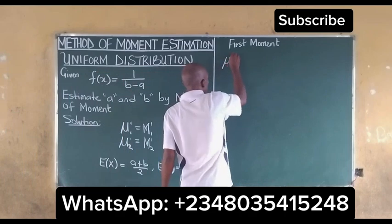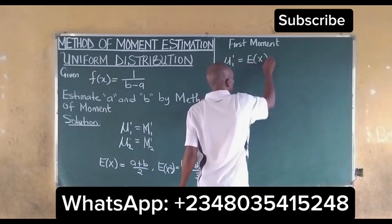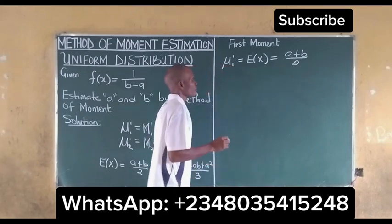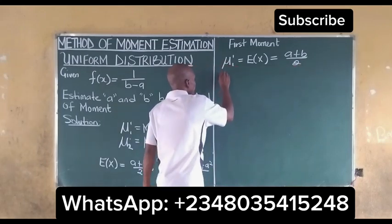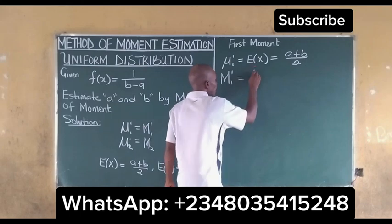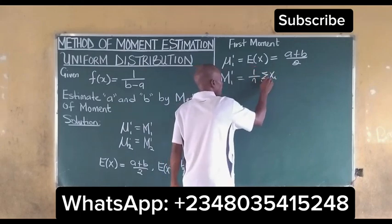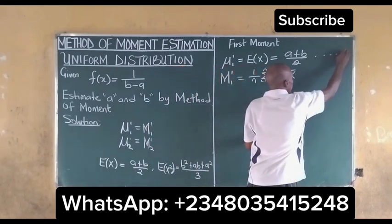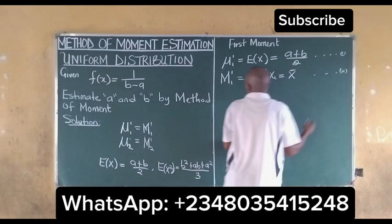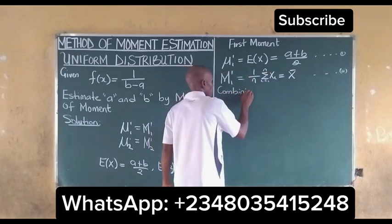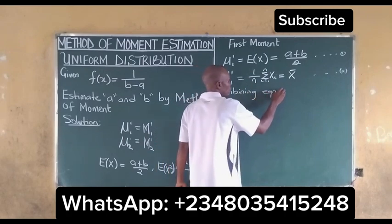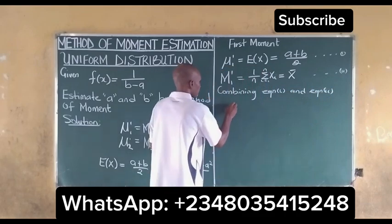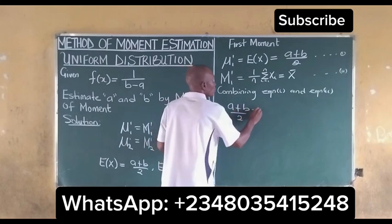For the first moment, we have that mu is equal to the expected value of X, which equals (A + B) / 2. For the sample mean, we have (1/n) times the summation of x_i, for i running from 1 to n. We know that this is our mean, so this equals x̄. These are equation (i) and equation (ii).